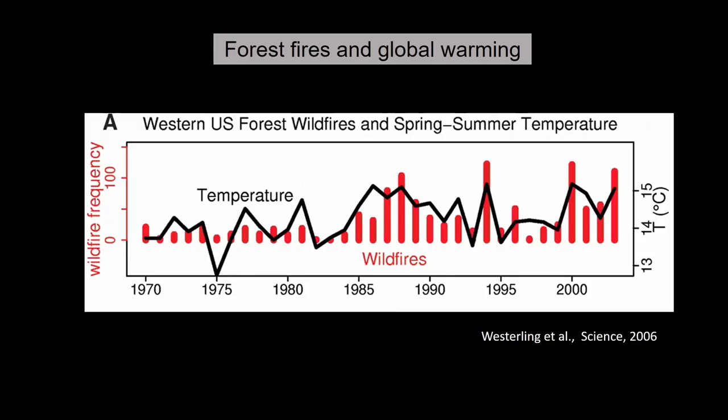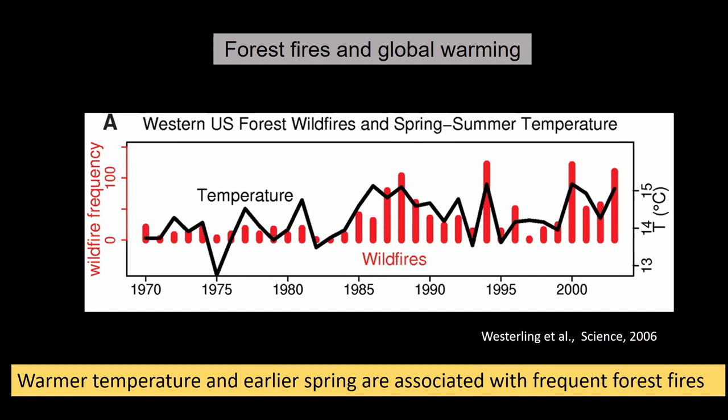A study published in 2006 showed wildfire frequency in western United States. Red bars indicate fire frequency and the black curve indicates temperature in that region. From 1970 to 2000, the frequency of fire is increasing. Whenever there is strong summer and spring temperature, fire frequency is higher. This work establishes that warmer temperatures and earlier spring are associated with more frequent forest fires.